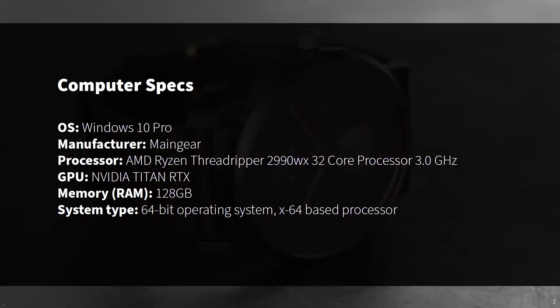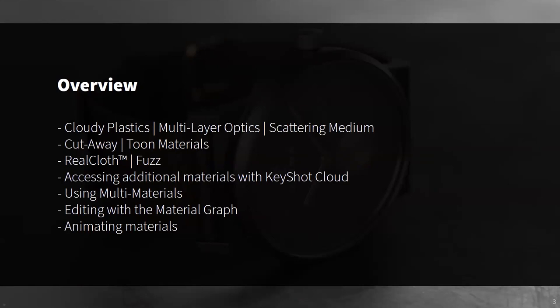In the studio, we have a beast of a machine from Main Gear — an AMD Ryzen Threadripper 2990WX with 32 cores at 3 gigahertz, an NVIDIA Titan RTX GPU, and 128 gigs of RAM, running Windows 10 Pro. If you're looking for a render rig, check out Main Gear's website. In this workshop, Soren and I will go over some of the more interesting advanced materials in Keyshot, covering use cases and methods for incorporating them into product visuals. We'll cover cloudy plastics, multilayered optics, scattering medium, cutaway, and tuned materials, finishing with an overview of Real Cloth and Fuzz.